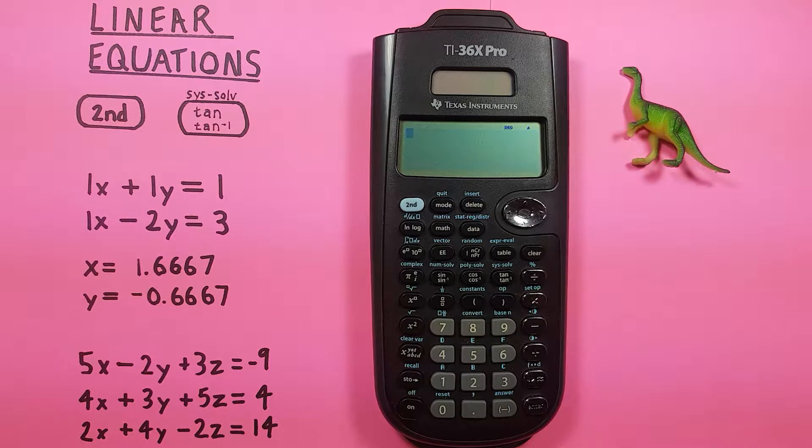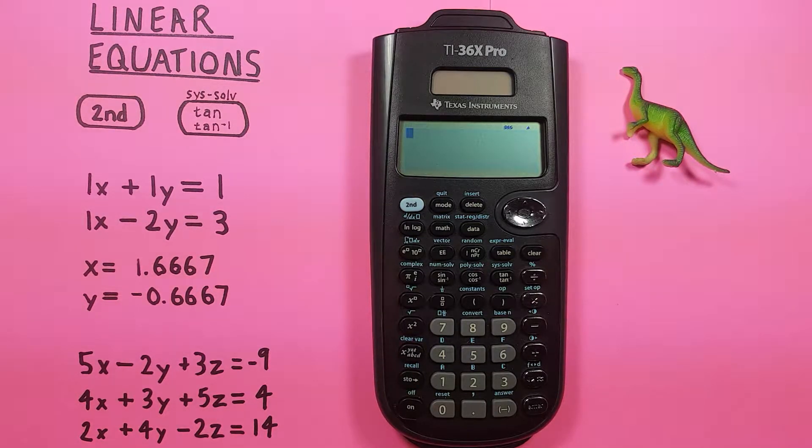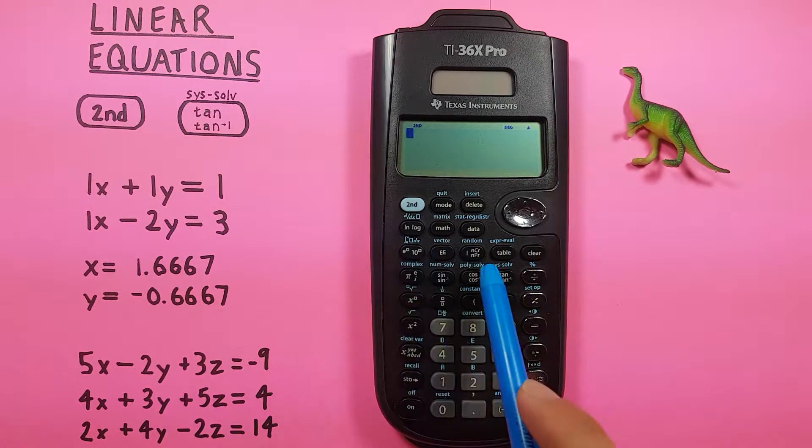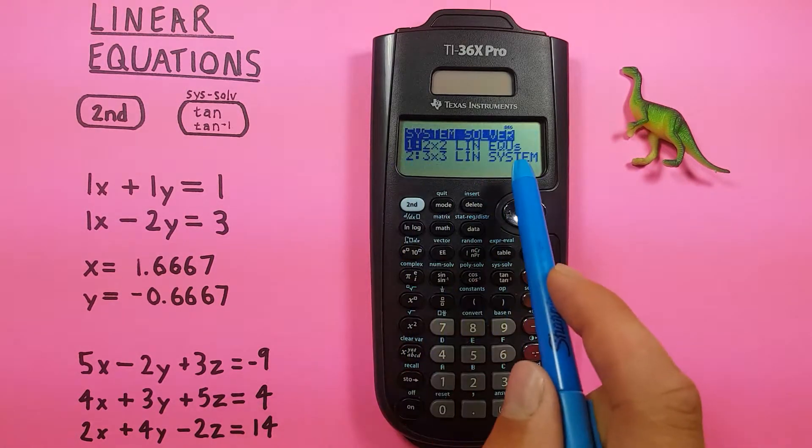So if we want to solve linear equations what we're trying to do is solve for an X, a Y, or a Z, whether they're two variable or three variable equations. To get started we press the second function key and then the tan key. That brings us up to this menu here.